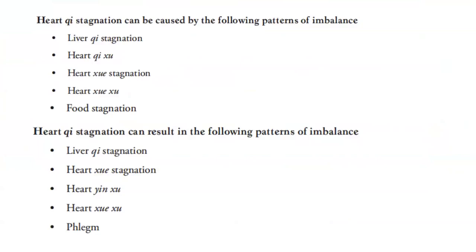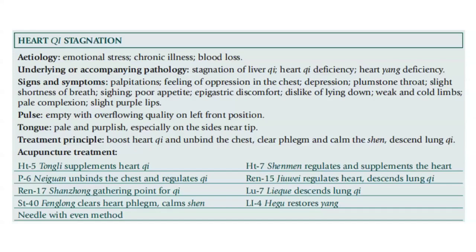Heart qi stagnation can be caused by liver qi stagnation, heart qi deficiency, heart blood stagnation, heart blood deficiency, and food stagnation. In turn, this can result in liver qi stagnation, heart blood deficiency, and phlegm. To summarize, heart qi stagnation has its etiology in emotional stress, chronic illness, and blood loss. The underlying or accompanying pathology are stagnation of liver qi, heart qi deficiency, and heart yang deficiency. Signs and symptoms are palpitations, feeling of oppression in the chest, depression, plum-pit throat, slight shortness of breath, sighing, poor appetite, epigastric discomfort, dislike of lying down, weak and cold limbs, pale complexion, and slight purple lips. The pulse is empty with an overflowing quality on the left front position, and the tongue is pale and purplish, especially on the sides near the tip.